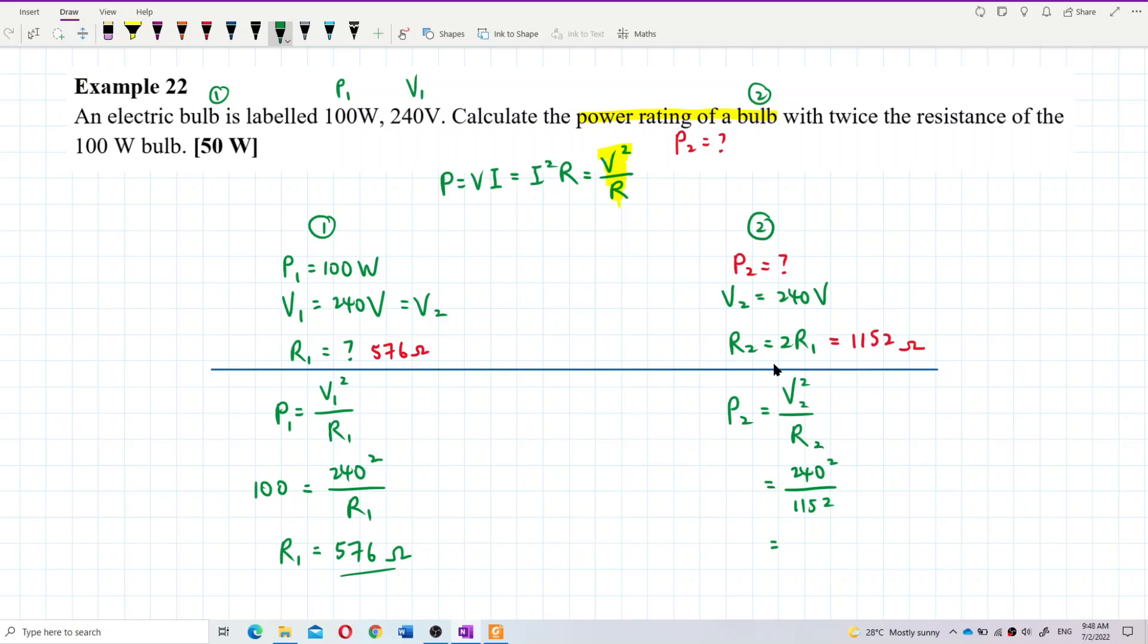So the answer for power 2 is 50. What's the unit for power? Watt. So that's correct, the answer is 50 watts. That's the power for bulb 2. So that's all. Bye!